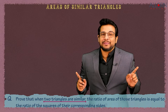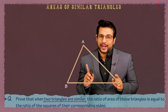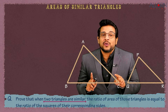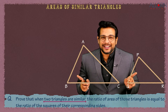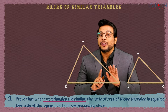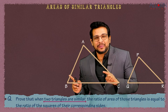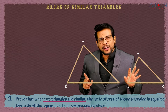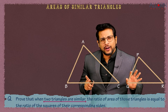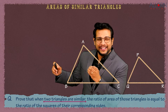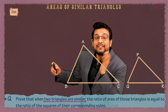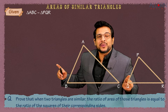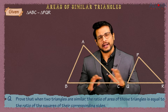Two similar triangles are not congruent — they are of the same shape but not of the same size. So we draw two triangles: one is ABC, the other is PQR. They look similar — one is bigger, the other is smaller. This is what we write in the Given: triangle ABC is similar to triangle PQR.